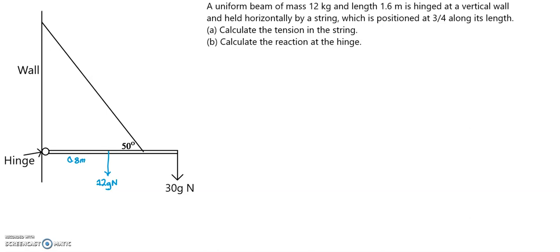Now it says that the string is positioned three-quarters along its length. So three-quarters of 1.6 is 1.2, so this distance here will be 0.4 m and this distance here will also be the same, 0.4 m.